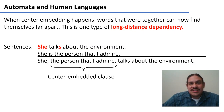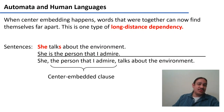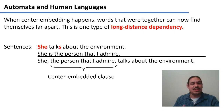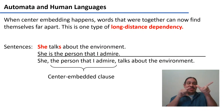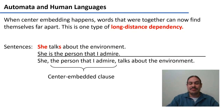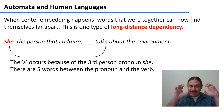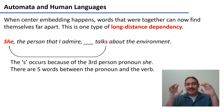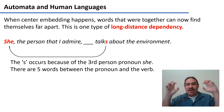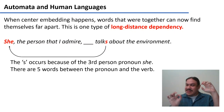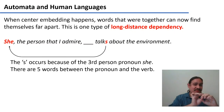What would happen if we broke up this structure with a center-embedded clause? We can combine 'she talks about the environment' and 'she is the person that I admire' to get: 'she, the person that I admire, talks about the environment.' This has a center-embedded clause. Now there is a long-distance dependency between 'she' and 'talks,' because the third-person -s on 'talks' is determined by 'she,' which is now five words away.